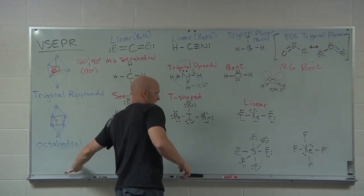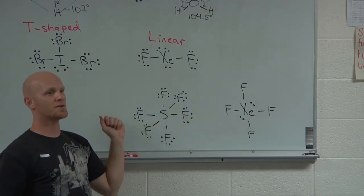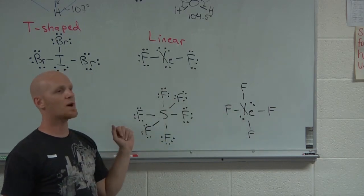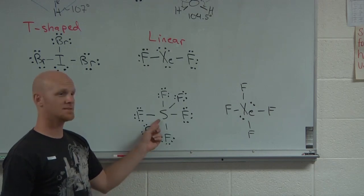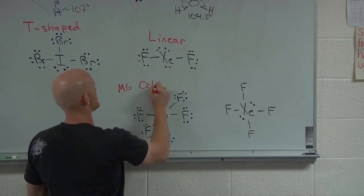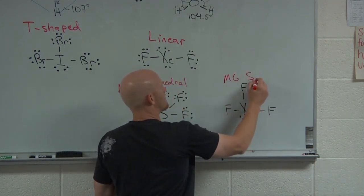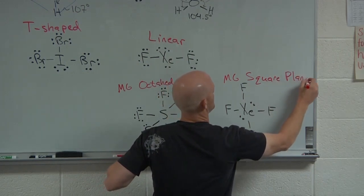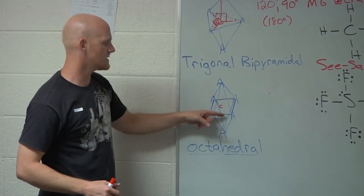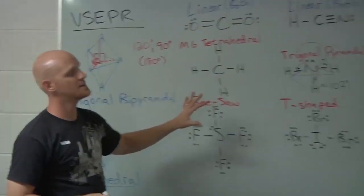SF6 has six electron domains, and XeF4 also has six electron domains. For six electron domains, the electron domain geometry is octahedral. SF6 has no non-bonding domains, so its molecular geometry is also octahedral. XeF4 has two lone pairs — one above and one below — leaving four atoms in a square, so its molecular geometry is called square planar.